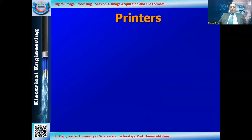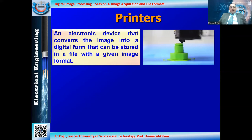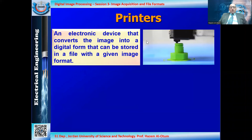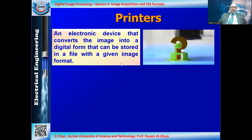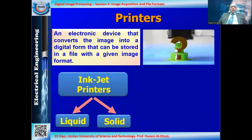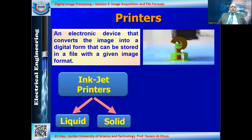Now let's look at printers, which are considered permanent display devices, where output is printed on paper or saved in a file format. Looking at the image — the 3D printer shown is not what we are interested in. We are interested in printers where output is either on a file or on paper. We have inkjet printers: there are two types dealing with spraying or putting ink on paper — liquid type and solid type.